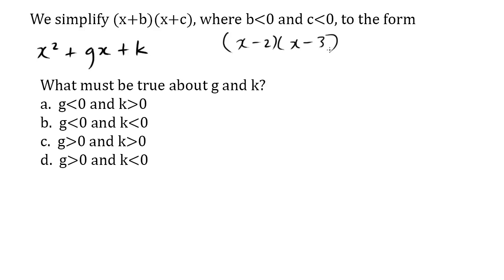Negative times a negative must be positive. So k must be positive. k must be greater than 0. So choices b where k is less than 0 is incorrect, and choices d where k is less than 0 is incorrect. So our possible answer is either a or c.